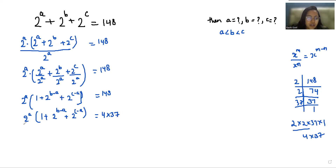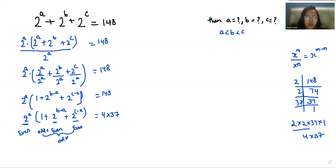Now comparing both sides: 2^a always gives an even number, and 2^(b-a) and 2^(c-a) also give even numbers, so their sum is even. Adding 1 makes the bracket odd. So overall on the left we have even times odd. Comparing even with even and odd with odd: 2^a = 4, so 2^a = 2^2, and a = 2.